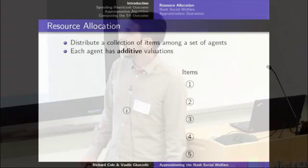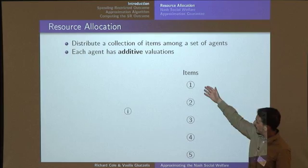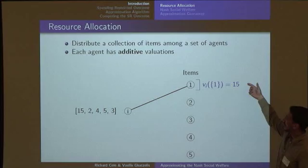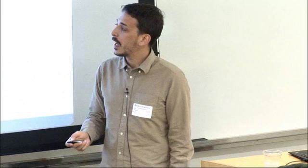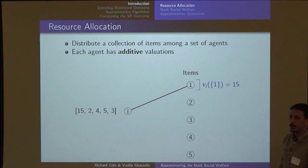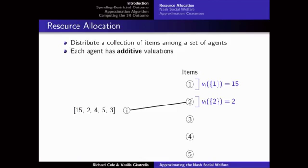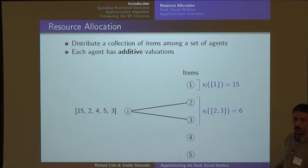We want to distribute a collection of items among a set of agents. Each agent, we assume, has additive valuations. Let's say we have these five items and we have an agent i. The fact that the agent has additive valuations means we can represent his preferences using a vector of just five numbers, one for each item — say 15, 2, 4, 5, and 3. This means that if we allocate the first item to the agent, his value for it would be 15. If we allocate item 2 to the player, his value would be 2.